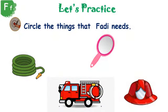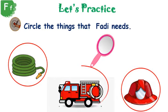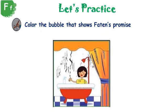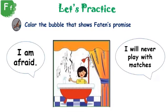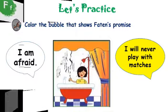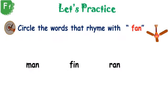Time to practice. Let's circle the things that Fadi needs. Color the bubble that shows Fadi's promise: "I am afraid" or "I will never play with matches." It's your turn. Circle the words that rhyme with FAN. Is it MAN, FAN, or RAN?